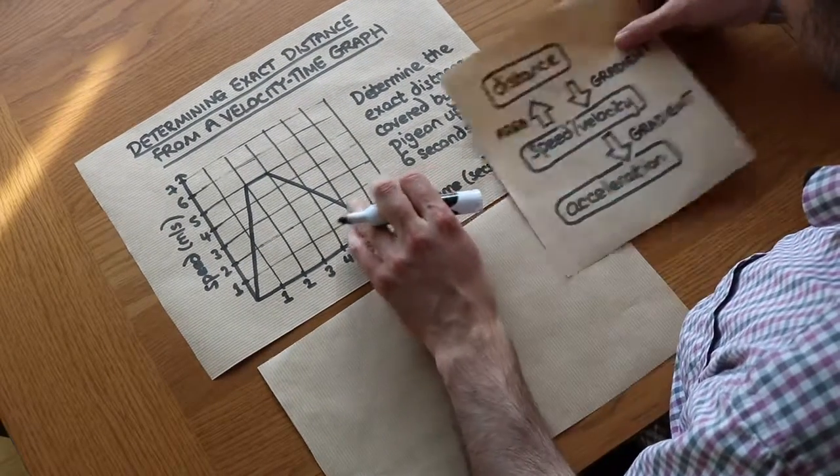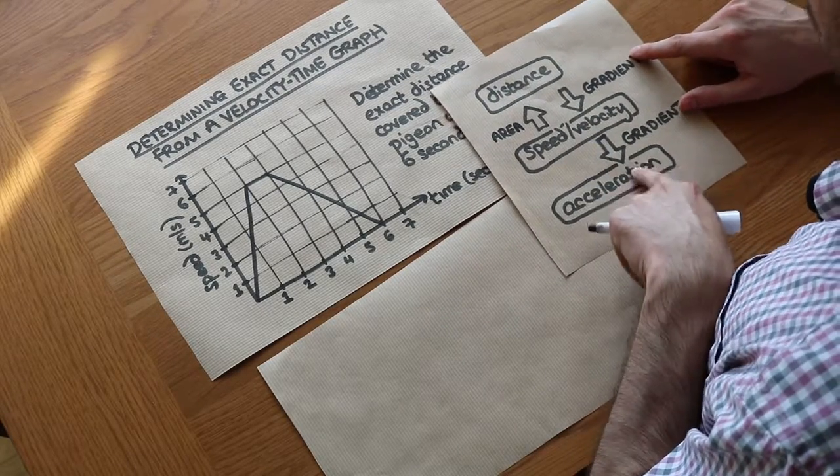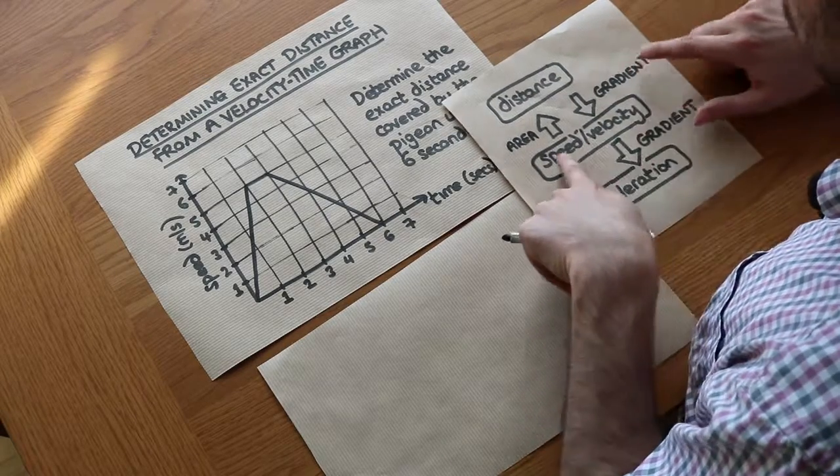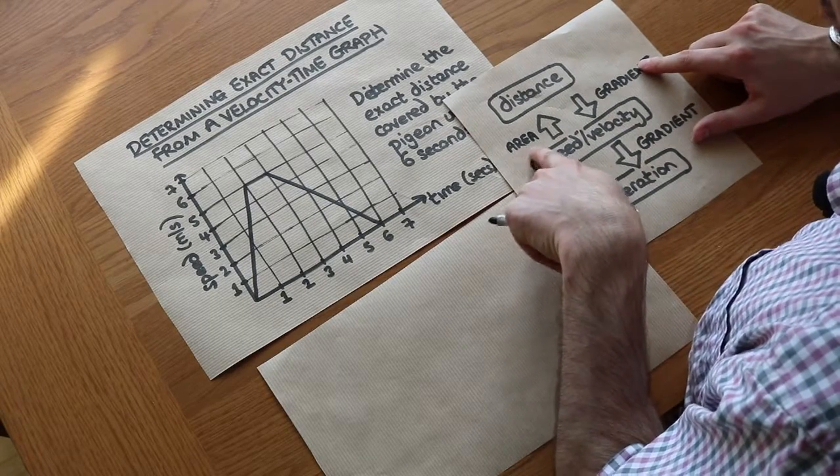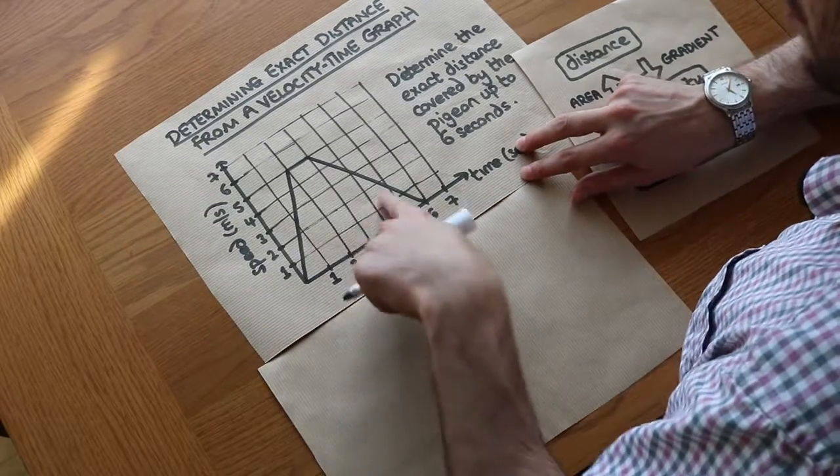Now I've got this handy chart here which summarizes how we can find acceleration and distance from different types of graphs. We've got a speed or velocity time graph here and we want to find the distance, so all we need to do is find the area under the graph to get the distance traveled. We just need to find the area of this shape here.